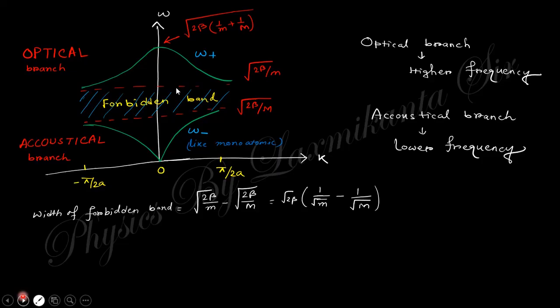In graphical point of view, you obtain this one. This is for ω₋ and this is for ω₊. You can find these values in the previous slide. This is the nature, and there is a forbidden gap. This is known as the forbidden gap and there is no allowed state present there. This is the optical branch and this is the acoustic branch.